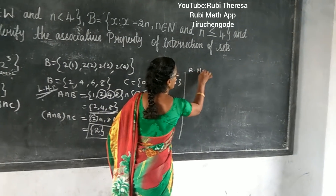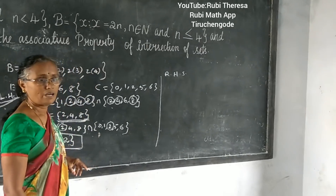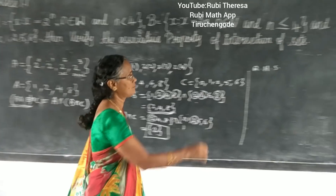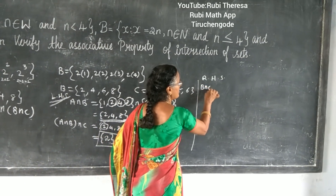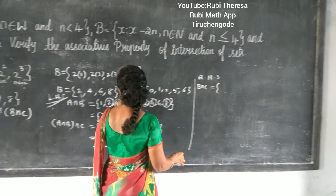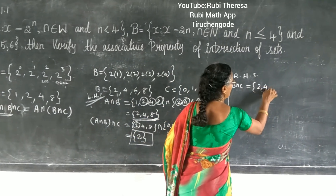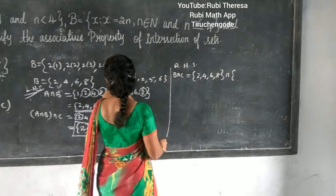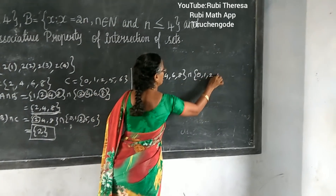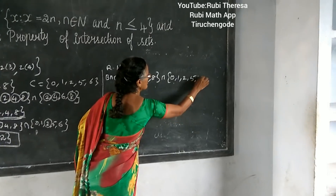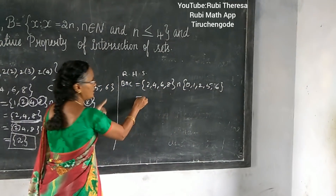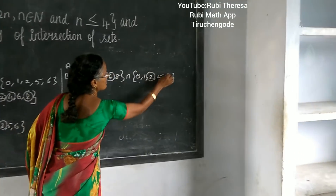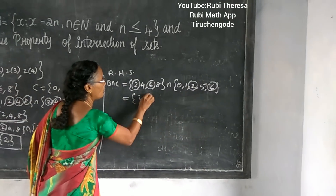Next is the RHS. RHS has B intersection C in the bracket. B = {2, 4, 6, 8} intersection C = {0, 1, 2, 5, 6}. Intersection means common elements. The common elements are 2 and 6. So B intersection C = {2, 6}.